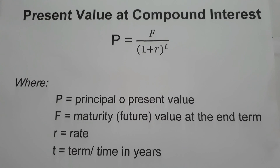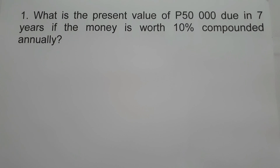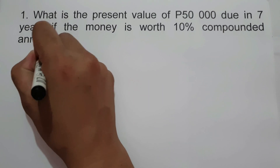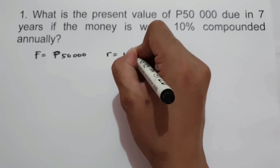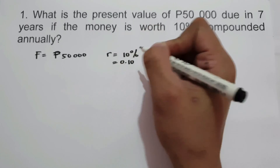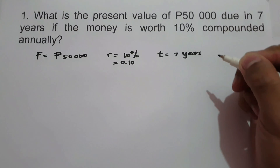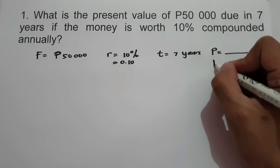Let's start with an example. On the first example: what is the present value of 50,000 due in 7 years if the money is worth 10% compounded annually? To find the present value, let us determine first the given. So 50,000 is our future value, the rate is 10% or 0.10, and the time is 7 years. We are going to find the present value or the principal, and let us also include the interest.